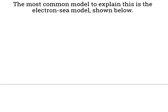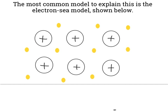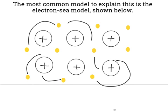The most common model to explain this is the electron sea model. This is the electron sea model — basically cations surrounded by little yellow dots representing electrons. Notice the electrons aren't really associated with any one ion; they're just kind of floating and moving around the compound. You end up seeing a vague cloud around it to show that electrons are just moving in and throughout all these different cations. That's the electron sea model.